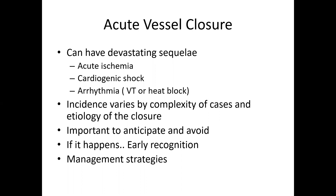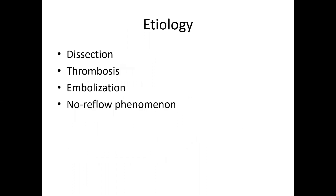Acute vessel closure can have devastating sequelae — it can present with acute ischemia, can progress to cardiogenic shock, and can also be associated with significant arrhythmic events, either VT or significant heart block. The incidence varies by the complexity of the case and the etiology of the acute closure. It's important to anticipate any potential complications and try to avoid them. If they do occur, earlier recognition is key to identify the pathology and manage the patient, and you will need to have management strategies lined up.